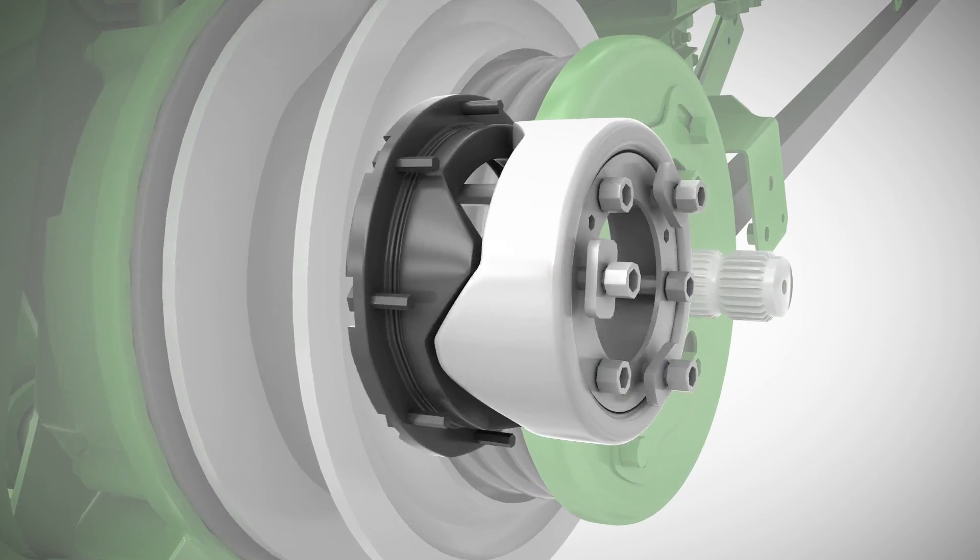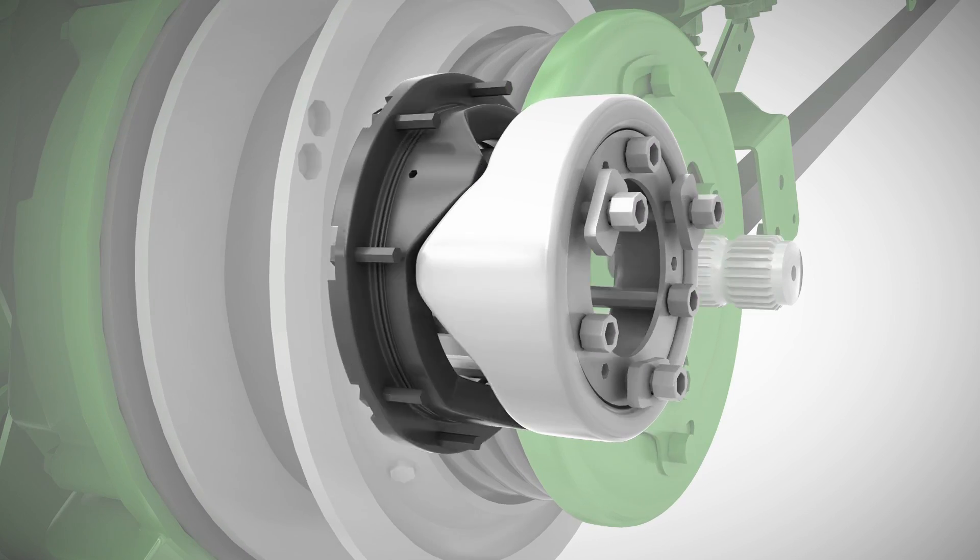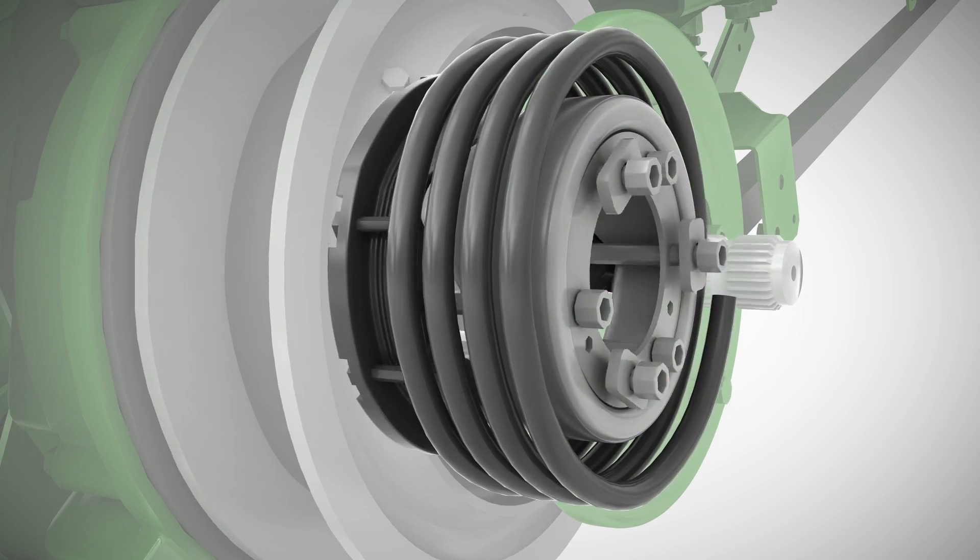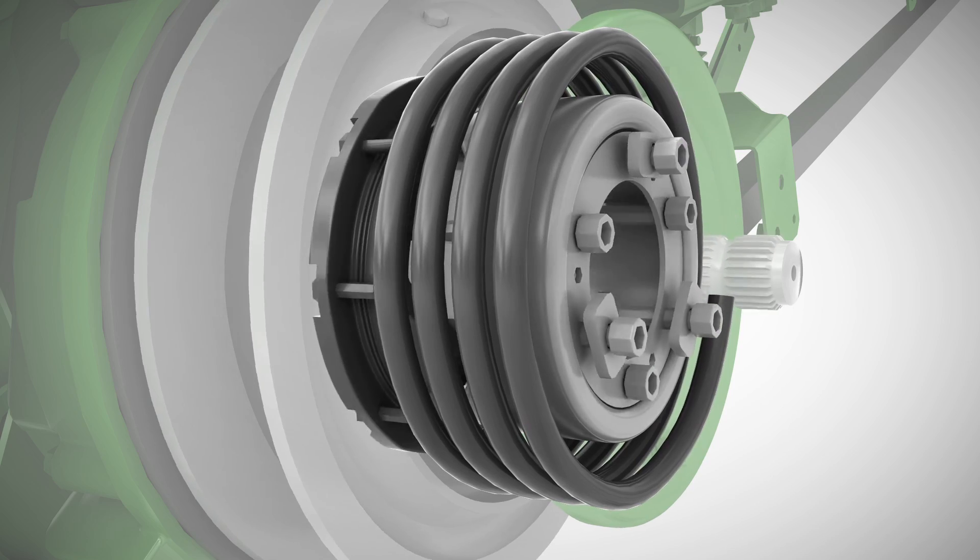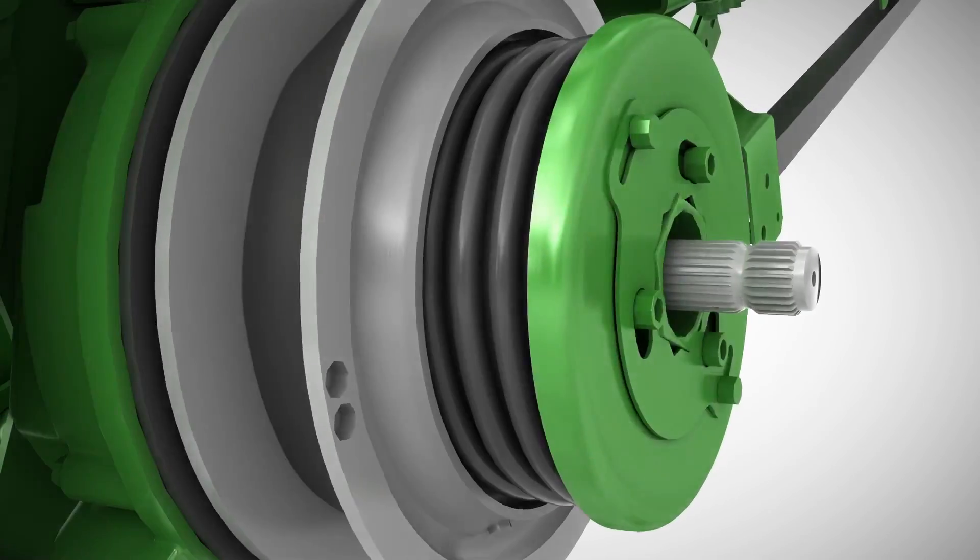High torque sensing comes from the huge cams that have a more aggressive angle and a heftier coiled tension spring for a combined 50% increased clamping load on the drive belt.